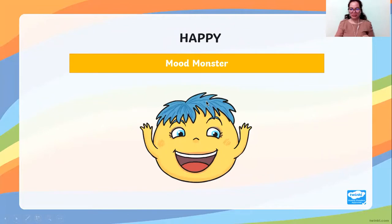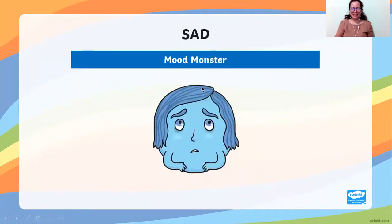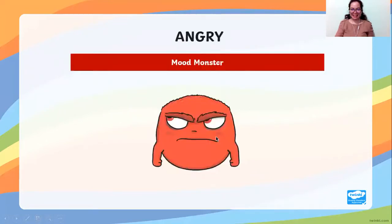The first mood of the monster is happy. Look at the picture — the monster is happy. Are you happy too? Next: sad. Look at the face of the monster; the monster is sad. Next: angry. Look at this, look at the face — he is angry.